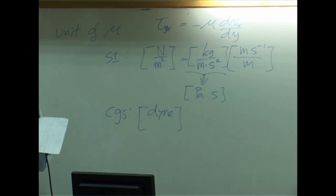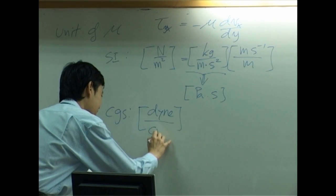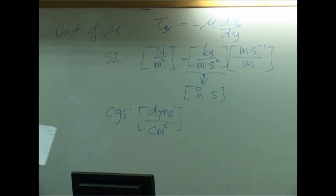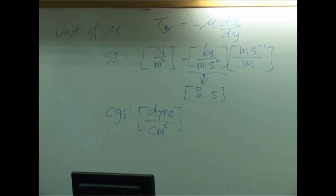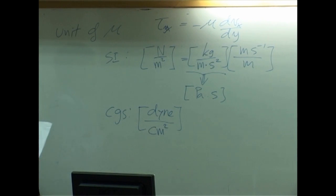I'm sure that someone in here has never heard of Dine before. The length in CGS unit is centimeter. CGS stands for centimeter gram per second.